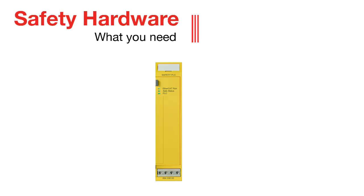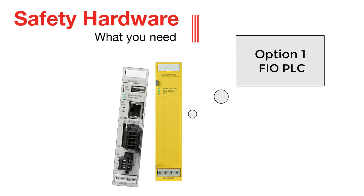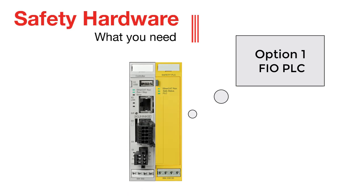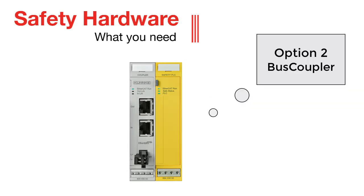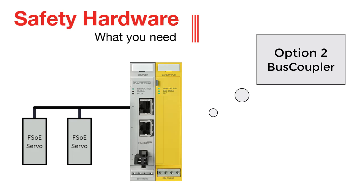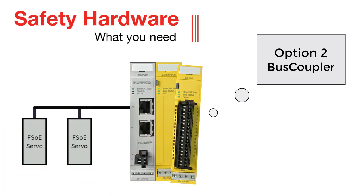There are two ways to use a safety PLC with CODESYS. Option 1: use one of our modular CODESYS PLCs from the FIO series. Option 2: you can connect our safety PLC to your own CODESYS PLC via our FIO bus coupler. That's enough if, for example, you want to use servo drives with FSoE. Optionally, you can use one of our digital safety IOs.